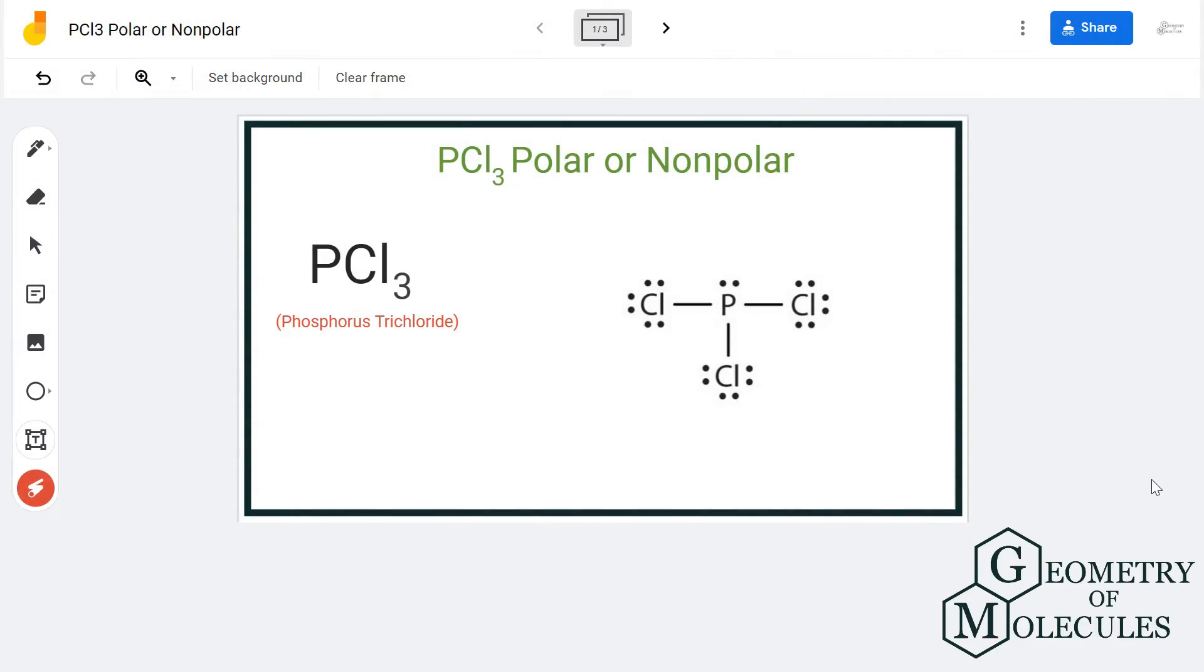Hi guys, today in this video we are going to determine the polarity for PCl3 molecule, it's a chemical formula for phosphorus trichloride. To determine its polarity, we will first look at its Lewis structure, so here you can